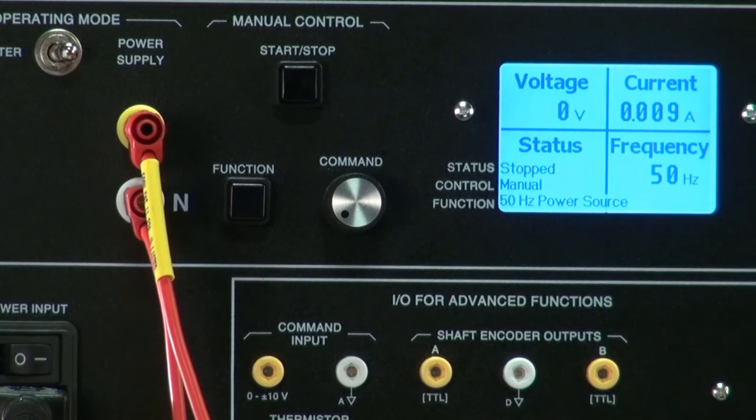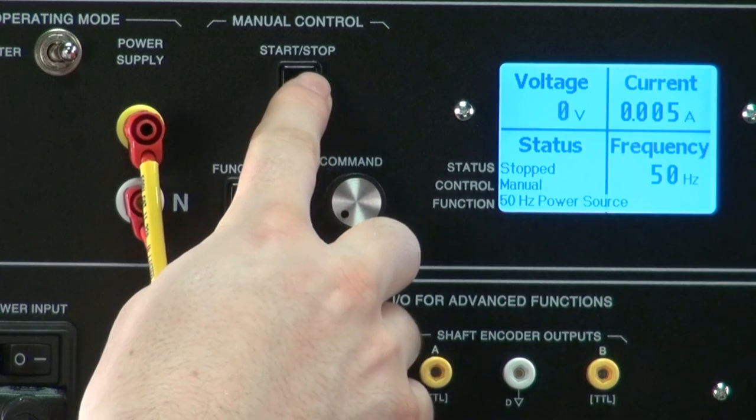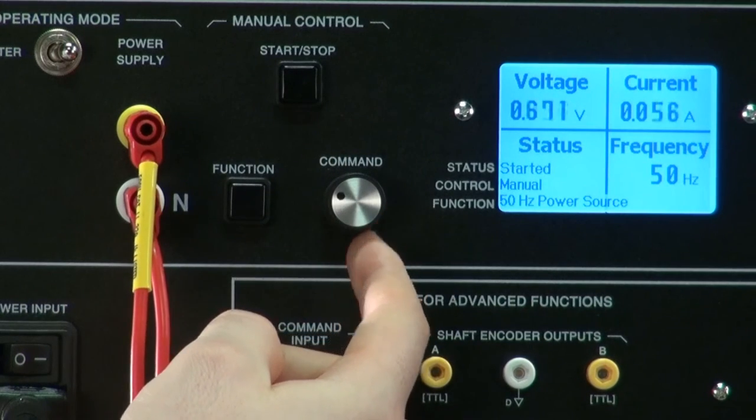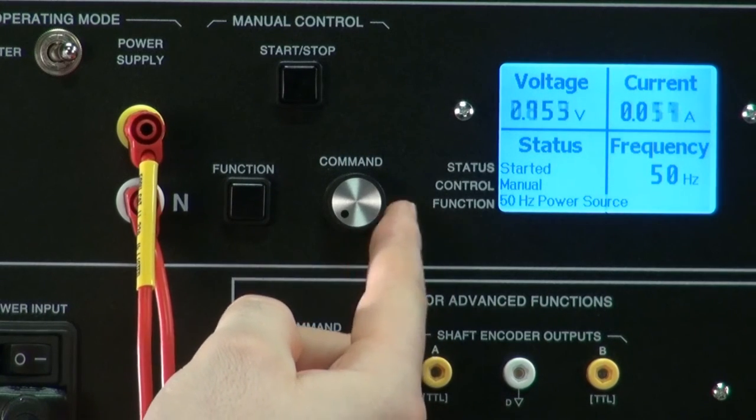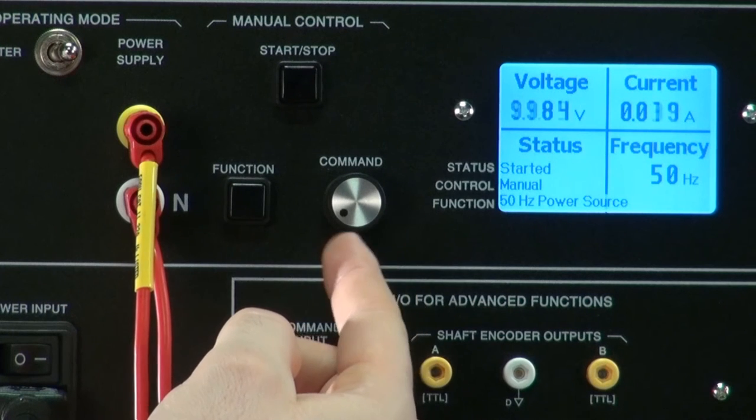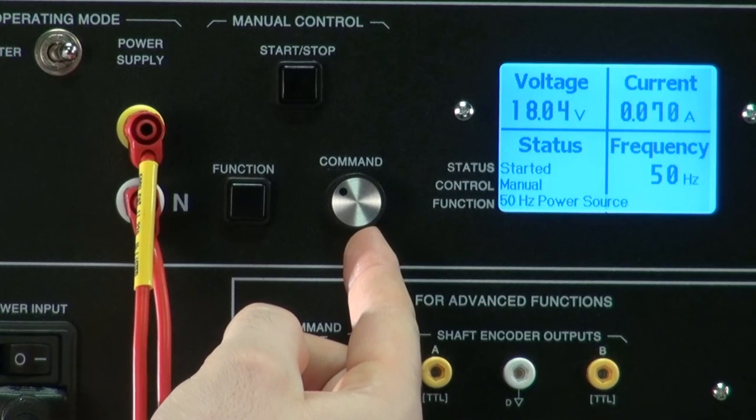50 hertz power source. This function uses the four-quadrant power supply to implement a variable AC voltage source of 50 hertz. Using the command knob, the user can vary the RMS voltage supplied by the 8960.